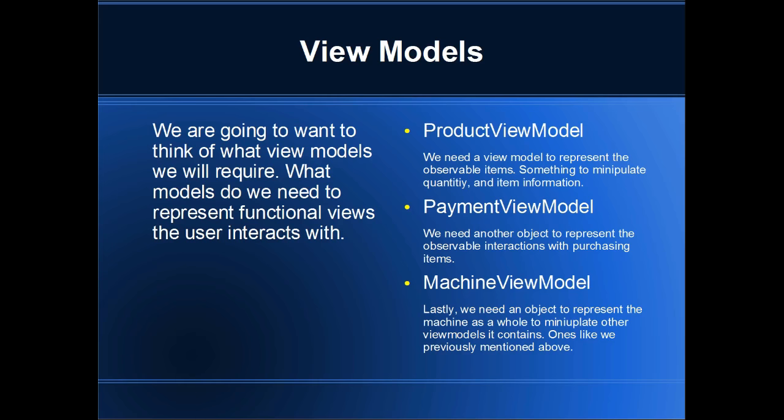Lastly, we need an object to represent the machine as a whole to manipulate the other view models it contains, like the ones we previously mentioned. The machine view model is just going to encapsulate the other two view models we created, and it's essentially going to be the center hub of our application. With that brief overview, we're going to run over to Visual Studio and start creating our application.